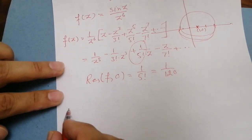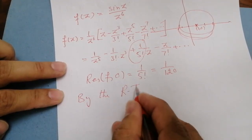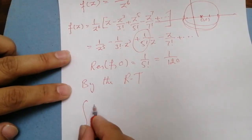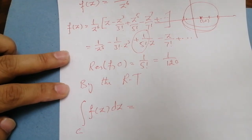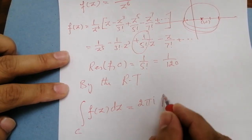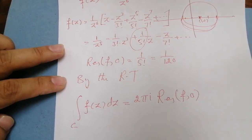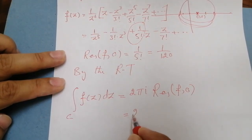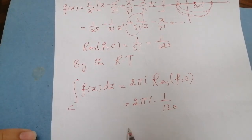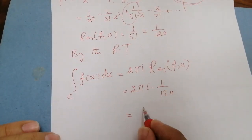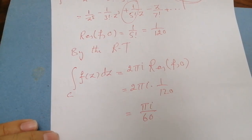Now applying the residue theorem, we write that the integration of f(z) along the closed curve c is equal to 2 pi iota times the residue of f at the only singular point, which is z = 0. This equals 2 pi iota times 1/120. Simplifying, the answer is pi iota divided by 60. And that is all.